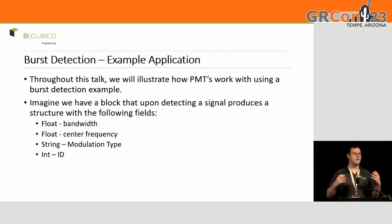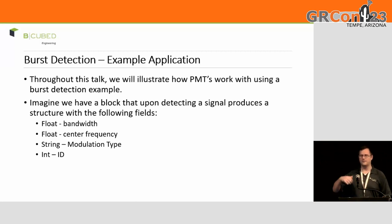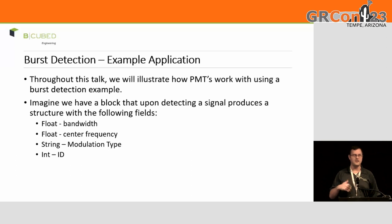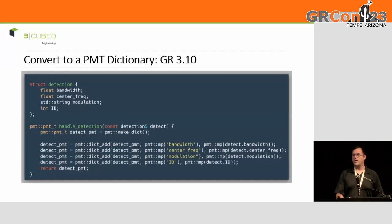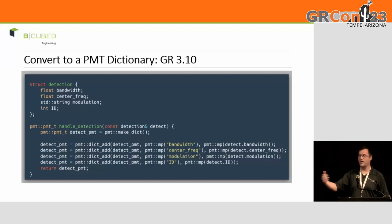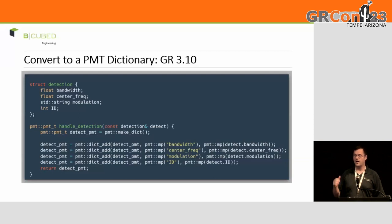To motivate what's going on and show examples of how things are and how they're changing, I came up with an example somewhat near and dear to my heart. Let's say you're working on a spectrum survey application, and when you find a burst of energy, you're going to do some analysis on it. We're going to produce a structure that figures out the bandwidth of the signal, the center frequency, the modulation type, and an integer ID associated with it.